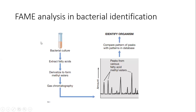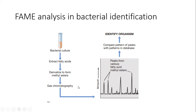For FAME analysis, first we need to grow the bacterial cells in culture and separate the cells by centrifugation from the bacterial growth medium. Once the cells are separated, they are lysed and their fatty acid component is extracted and further derivatized to chemically convert them into methyl ester forms.